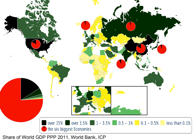The following two tables list the 25 largest economies by GDP nominal and 20 largest economies by GDP PPP. Members of the G20 Major Economies are in bold.